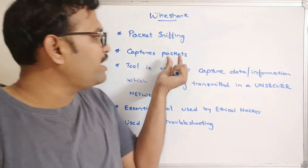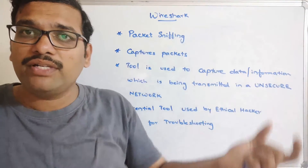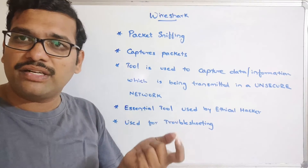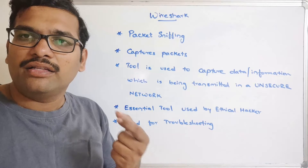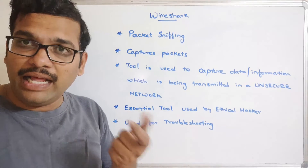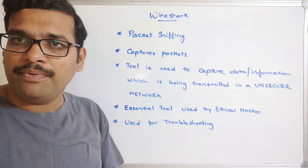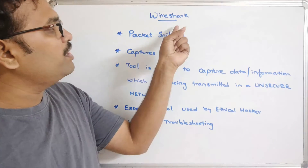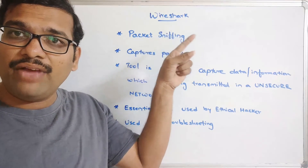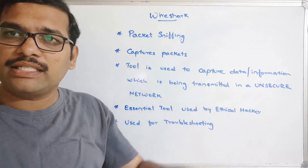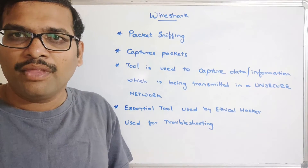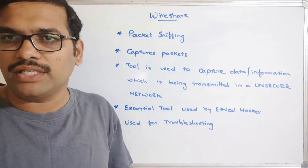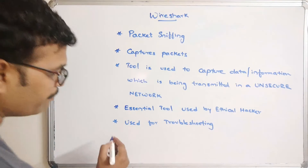As discussed in previous sessions, a packet will have data, source address, destination address, sequence number, length of the packet, timestamp, and the protocol through which the packet will be processed. Everything can be observed in this Wireshark tool. It is available as a pre-installed tool in Kali Linux. If you are using Windows, you can download and install it. This is also called a multi-platform tool.